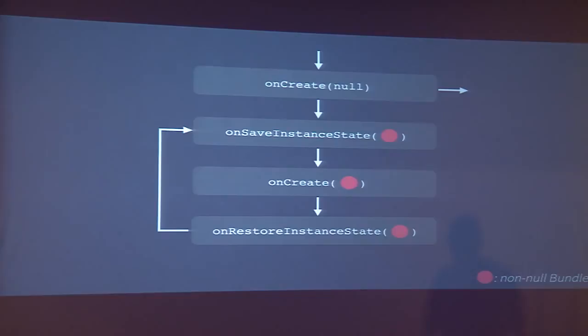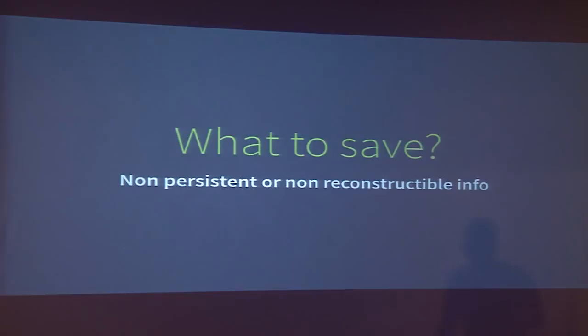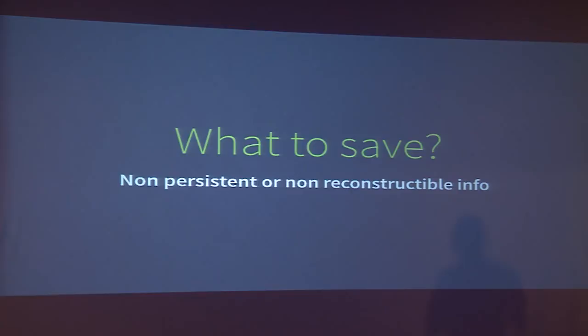This lifecycle path for configuration changes is exactly the same path the system follows during low-memory conditions. If the user finishes the app intentionally — pressing back — after onRestoreInstanceState the activity is destroyed. What you have to save is non-persistent and non-reconstructible info. You shouldn't save, for instance, the size of a view, because that can be recomputed and it's not configuration-independent. Most of the time what you save is only data or information given by the user — the text in a field, or the check state of a checkbox.